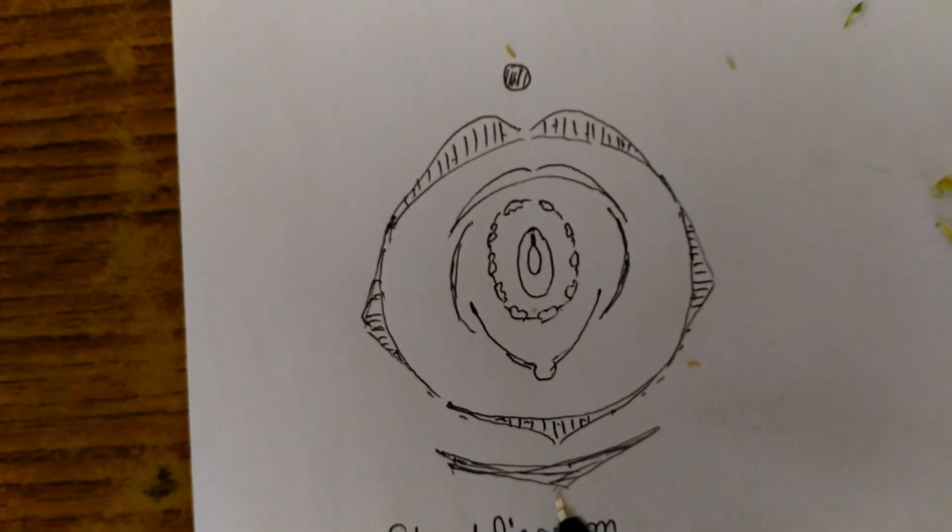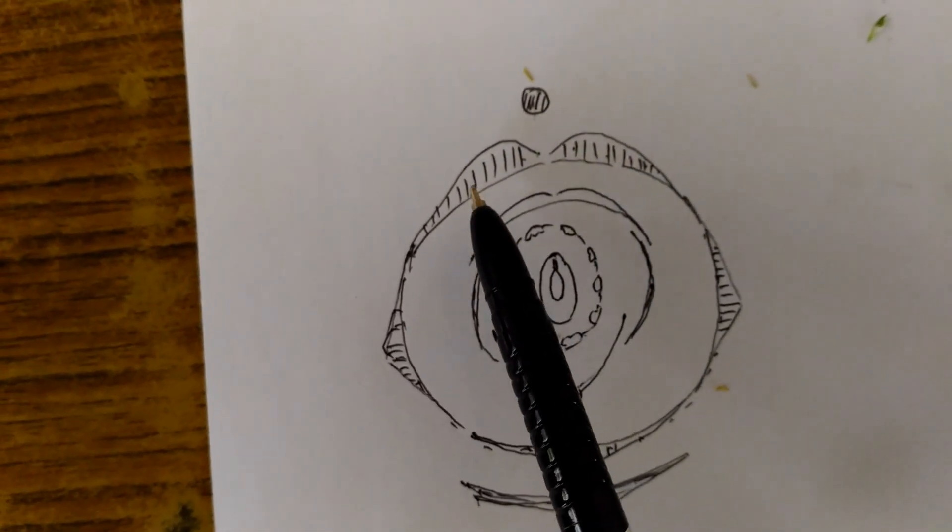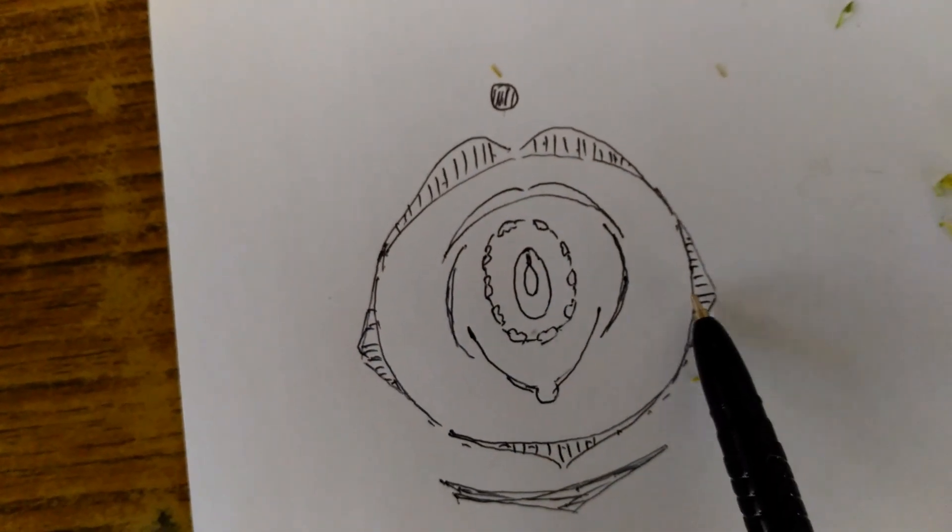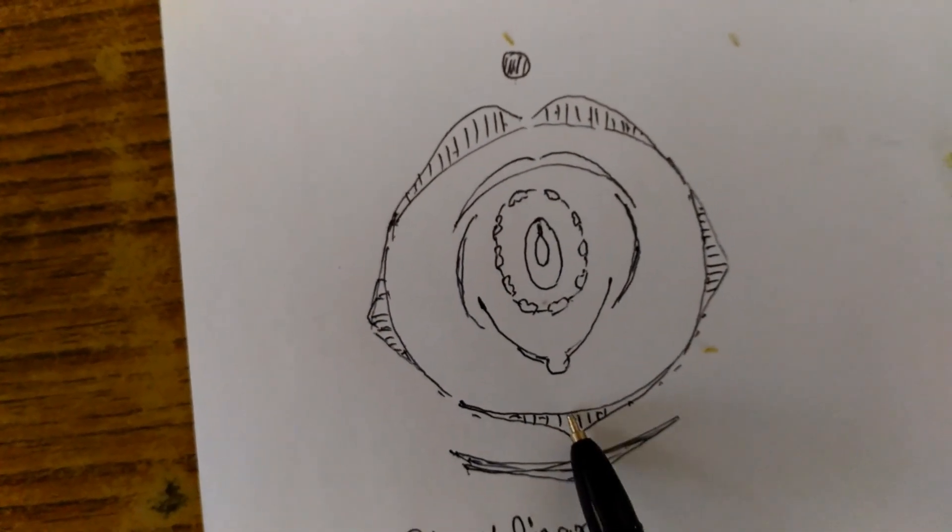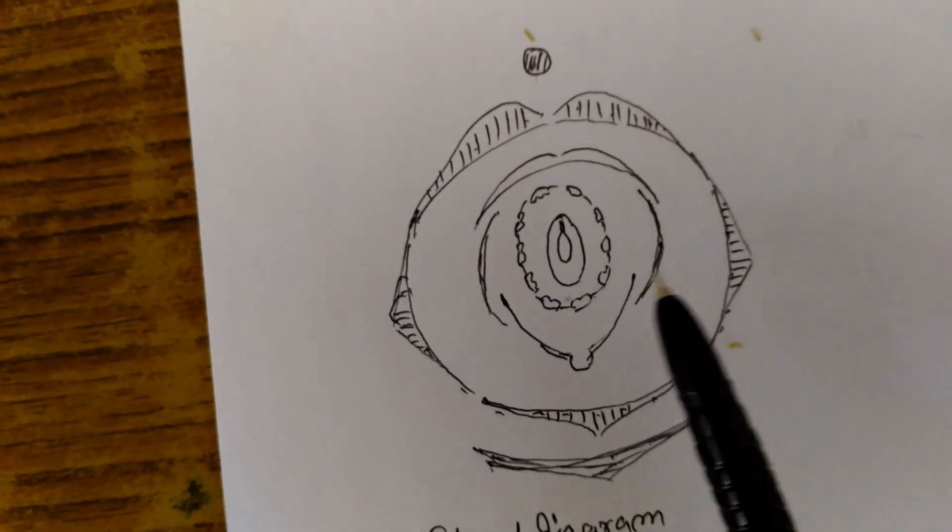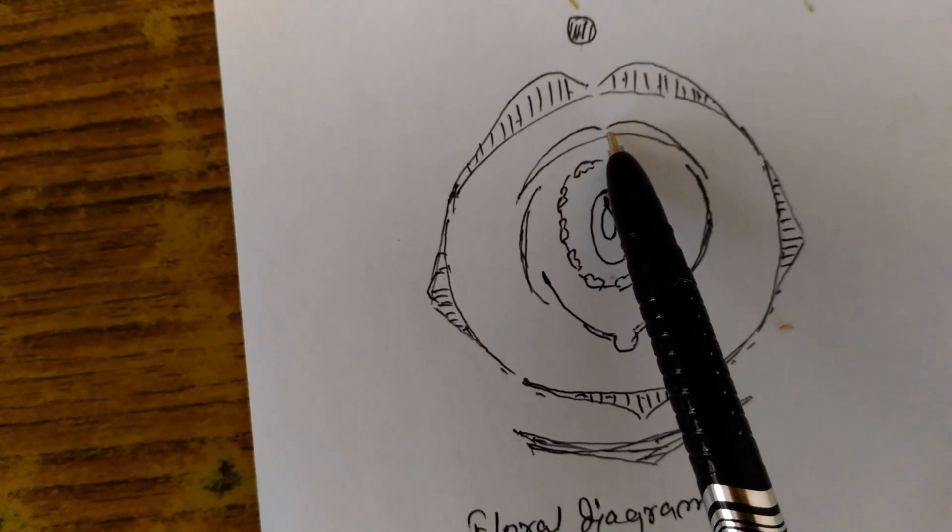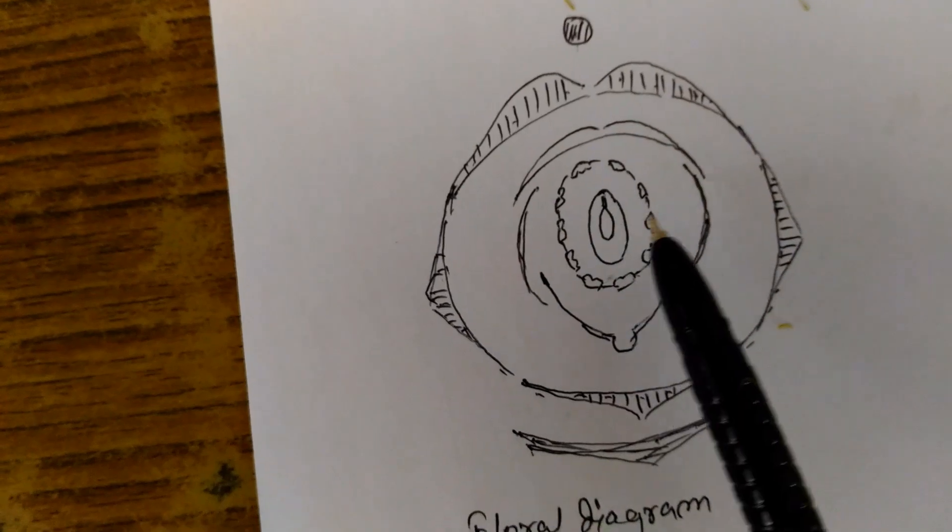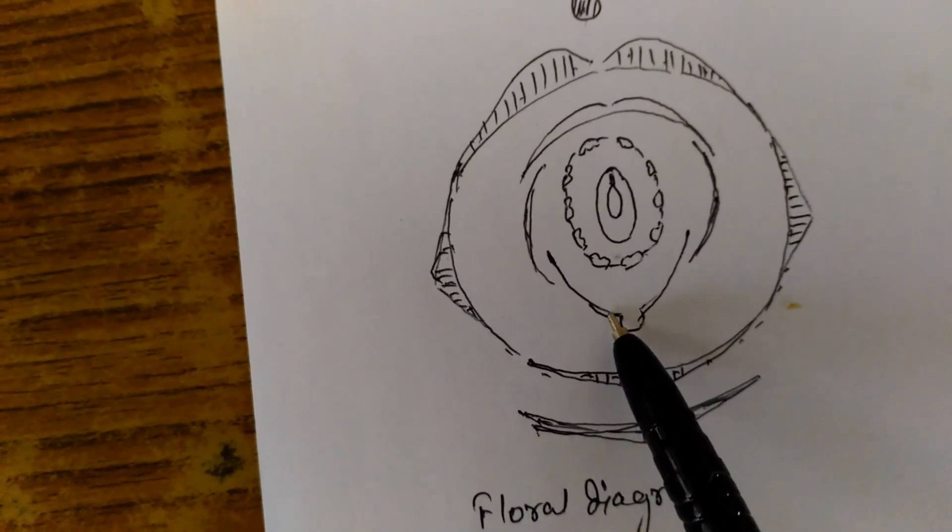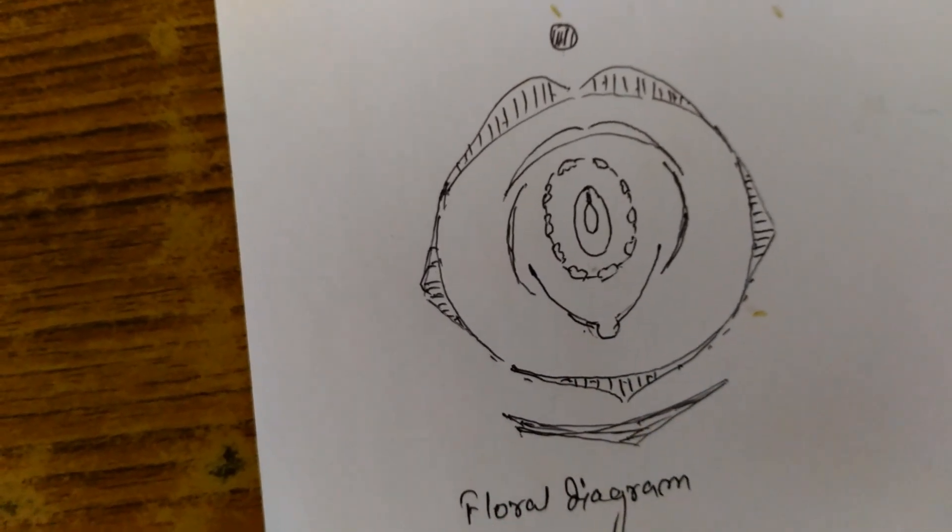This is the floral diagram. This one is the mother axis and sepals: lateral one and anterior sepal, 2, 3, 4, 5. Then these are the petals, vexillary in aestivation, and then this one is the bract.